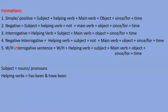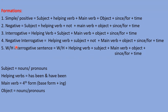Subject: we know that these are nouns and pronouns. Helping verb: has been and have been. Remember this — of every tense we have to learn the helping verb. Of this tense, helping verb is 'has been' and 'have been.' Main verb: fourth form, means base form plus ing. Object: nouns and pronouns. Prepositions: since and for.